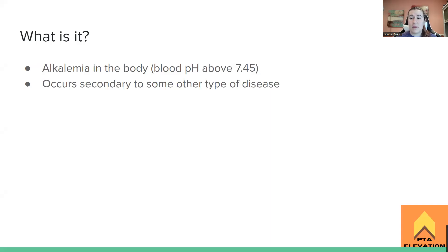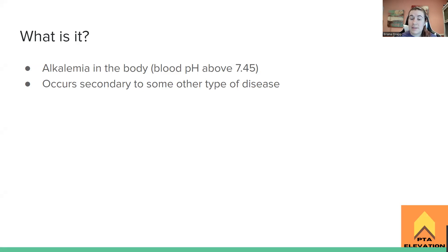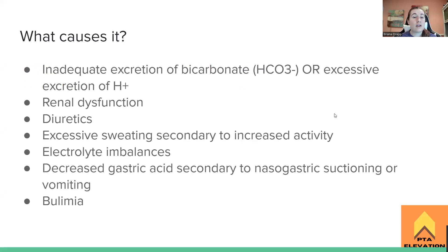What is metabolic alkalosis? When alkaline things happen, the blood pH is increasing, becoming more basic — there's alkalemia in the body, which is a blood pH above 7.45. Our normal range is 7.35 to 7.45. The body does not like to move outside that range. Again, this happens secondary to something else; it's not by itself — something has to cause it.